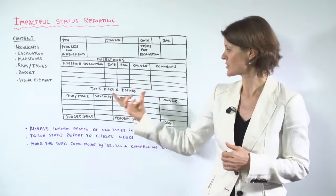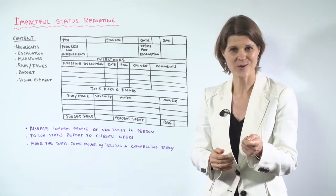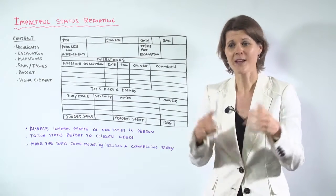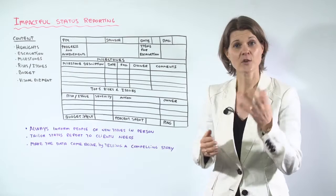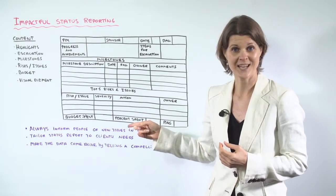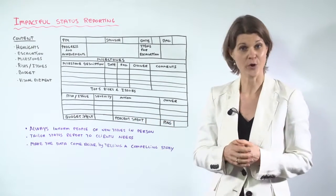And at the bottom here we have the top five risks and issues. Again, your stakeholders want to know what's really going on in the project. What are the real risks and issues of the project? So raise them here, but always tell them what action you are taking to address these risks and issues. And again, who the owner is.